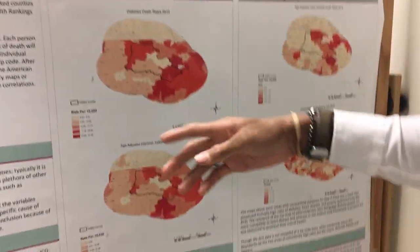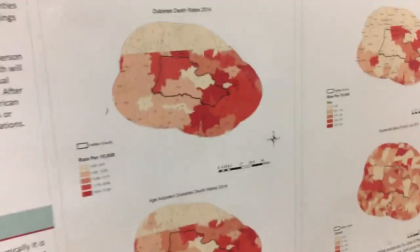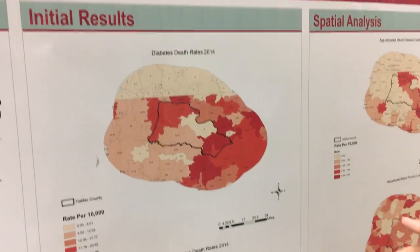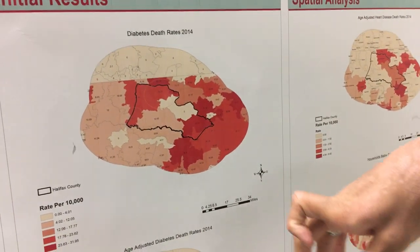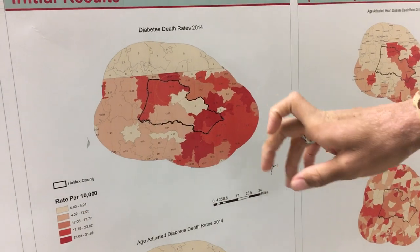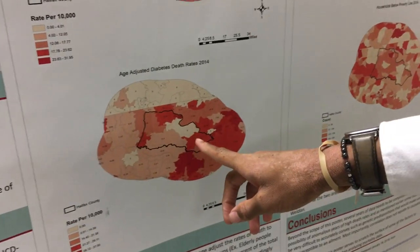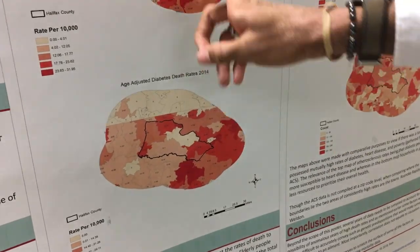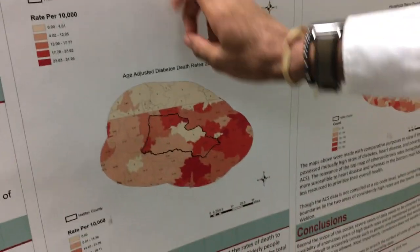We're looking at different health outcomes in the short term. For demonstrative purposes, we're just going to look at methods rather than an actual concrete conclusion, because people are so individually different. We're just looking at diabetes, and we're looking for areas that show a high death rate of diabetes and a high age-adjusted rate of diabetes. The place that fits the bill is Roanoke Rapids and Hollistertown.